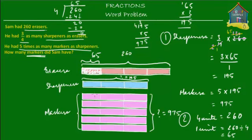Now for markers, how many units are there? Let's count: one, two, three, four, five, six, seven, eight, nine, ten, eleven, twelve, thirteen, fourteen, and fifteen.